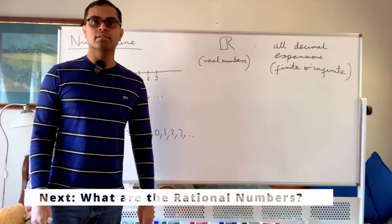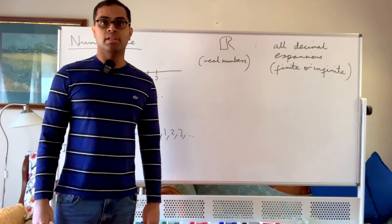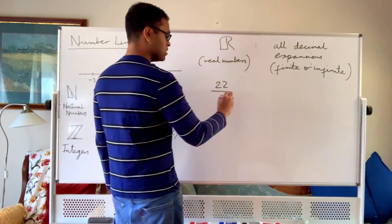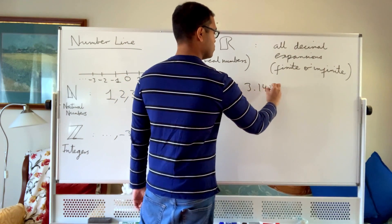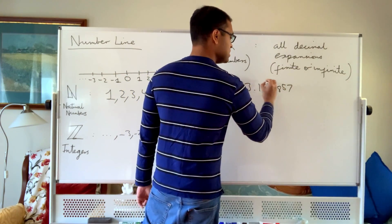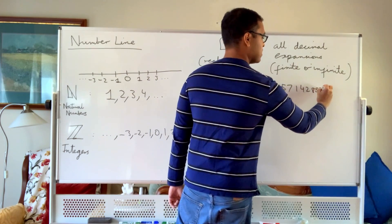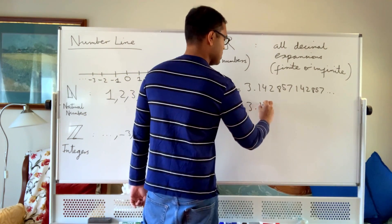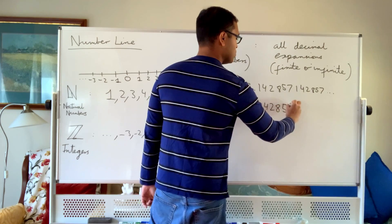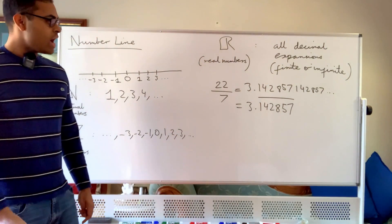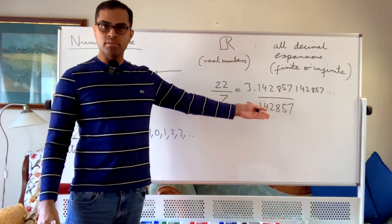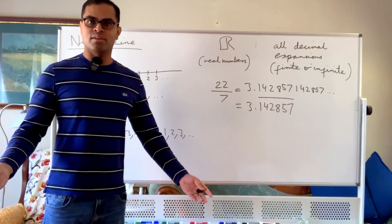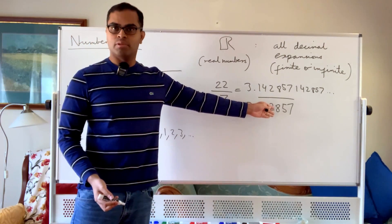Fractions can also have infinite decimal expansions. For example, 22 over 7 — a famous approximation of pi — when written out is 3.142857142857..., with the digits 142857 repeating indefinitely. The mathematical convention is to put a bar over the repeating block. This is an infinite decimal. For instance, if you have 22 apples to give to 7 people, you'd need to write out each person's share as that repeating decimal.